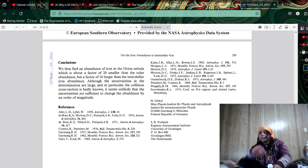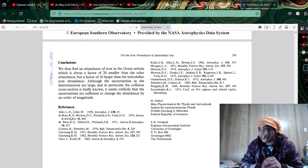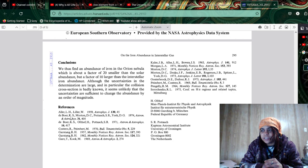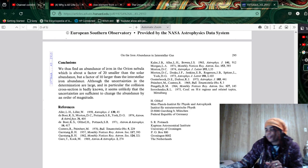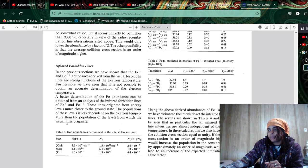Conclusion. We thus find an abundance of iron in the Orion Nebula which is about a factor of 20 smaller than the solar abundance, but is a factor of 10 larger than the interstellar iron abundance. Although the uncertainty in the determinations are large, and in particular to conclusion, cross-section is badly known, it seems unlikely that the uncertainties are sufficient to change the abundance by an order of magnitude. You know what that means? Good for you. I have no idea what I just said, but it was very interesting.